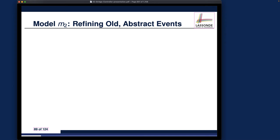Let's now talk about the concrete events in our refinement model m2. Remember there are two kinds of concrete events: old events and new events. The old events are those that already exist in the abstract model m1, and the new events are those only introduced newly into the refinement model m2. We're going to talk about each category one at a time. Let's talk about the old events first, which already exist in our abstract model m1.